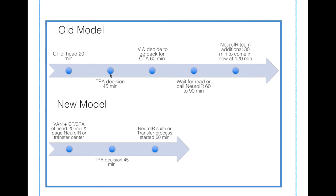The old model, seen throughout the country and the world: CT of head at 20 minutes, TPA decision within 45 minutes, IV TPA started, then back for CTA at 60 minutes, waiting for it to be processed and read, calling neuro IR around 60 to 90 minutes — best case, you're in the suite within 120 minutes. The new model: perform the VAN exam right as the patient comes in. If VAN positive, do CT and CTA of head at 20 minutes and page neuro IR at the same time.